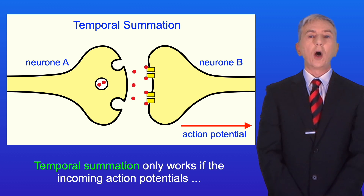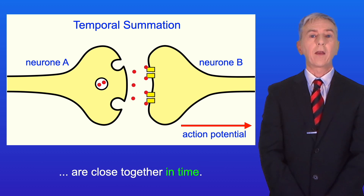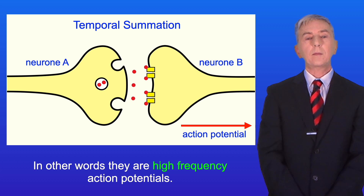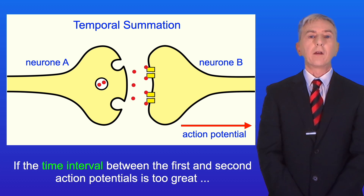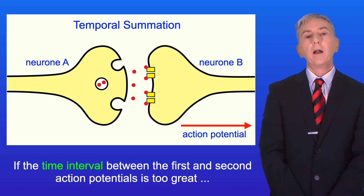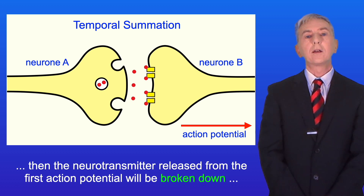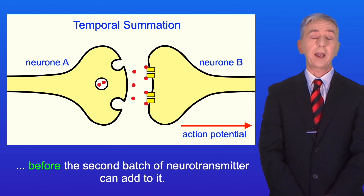Temporal summation only works if the incoming action potentials are close together in time. In other words, they are high frequency action potentials. If the time interval between the first and second action potentials is too great, then the neurotransmitter released from the first action potential will be broken down before the second batch of neurotransmitter can add to it.